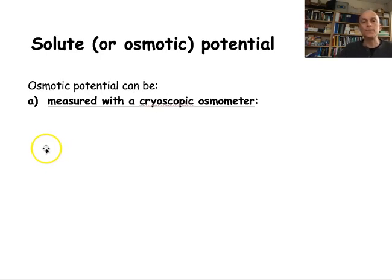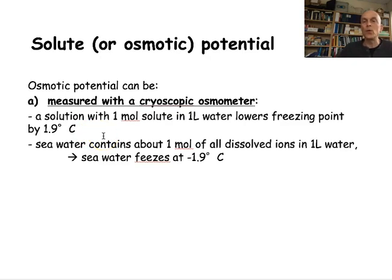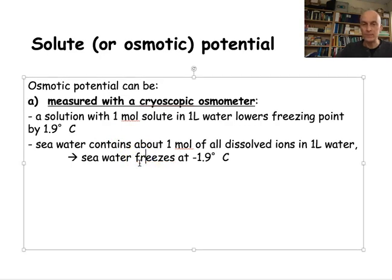To measure the osmotic potential, you can use a cryoscopic osmometer, which uses the principle that a solution with one mole of solutes per liter of water lowers the freezing point by 1.9 degrees Celsius. For example, seawater contains approximately one mole of total solute ions, and its freezing point is about minus 1.9 degrees Celsius rather than zero.